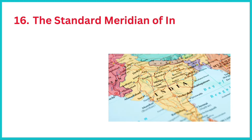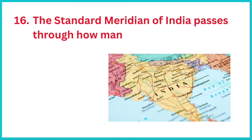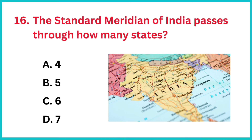The standard meridian of India passes through how many states? The correct answer is option B: five states — Uttar Pradesh, Madhya Pradesh, Chhattisgarh, Odisha, and Andhra Pradesh.